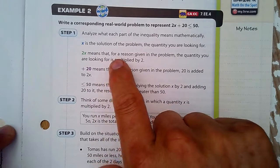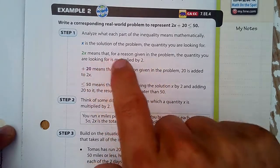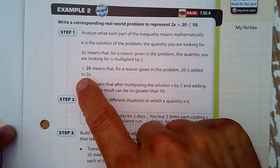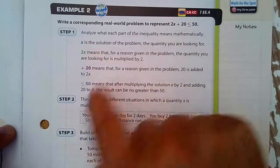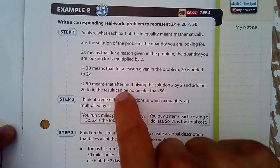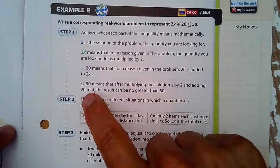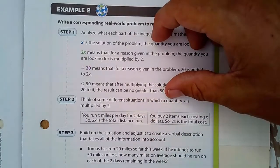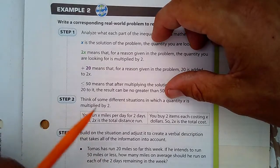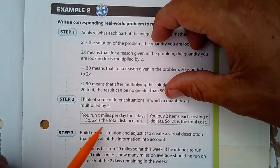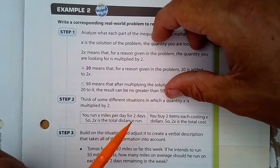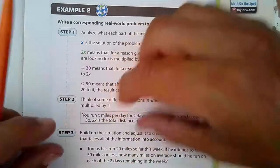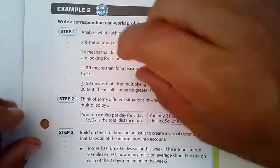2x means that for a given in the problem, the quantity you're looking for, you have to multiply it by 2. Plus 20 means you've got to add that to 2x. And we're just breaking all this down here. And then the less than or equal to 50 means that after multiplying the solution by 2 and adding 20, it has to be no greater than 50. So we'll think of situations where we want to multiply by 2. So you've run x miles per day for 2 days, so 2x is the total distance run. Or you buy two items, each costing x dollars, so 2x is the total cost. These are situations just breaking down that 2x right there, thinking of that piece by piece.